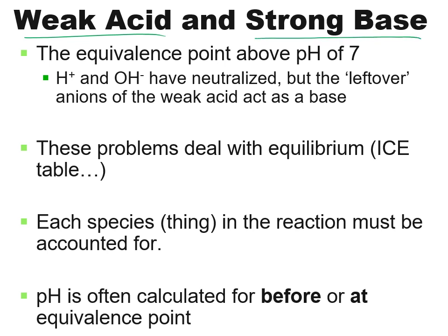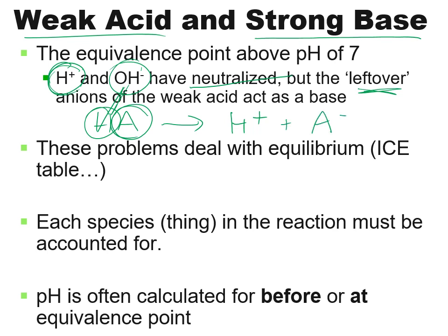With a weak acid and strong base titration, the weak acid reacts with the strong base so the hydrogens from the weak acid and the hydroxides from the base neutralize. But there will be some left over — specifically the anion that was the other part of the acid. If we write the weak acid as HA, the hydrogen neutralizes the hydroxide, but the anion remains as the conjugate base, and a new equilibrium is established.